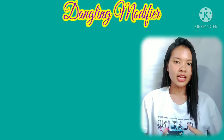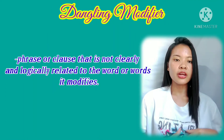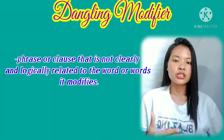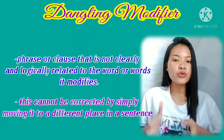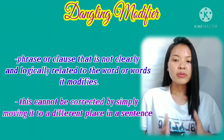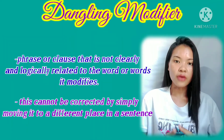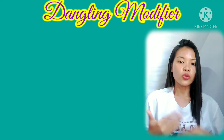Now let's discuss the dangling modifier. A dangling modifier is a phrase or clause that is not clearly and logically related to the word or words it modifies. Unlike the misplaced modifier, a dangling modifier cannot be corrected by simply moving it to a different place. It most often appears at the beginning of a sentence, though it can also come at the end. Sometimes the error occurs because the sentence fails to specify anything to which the modifier can refer.